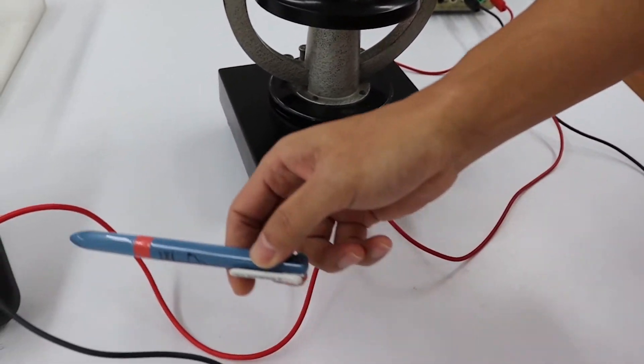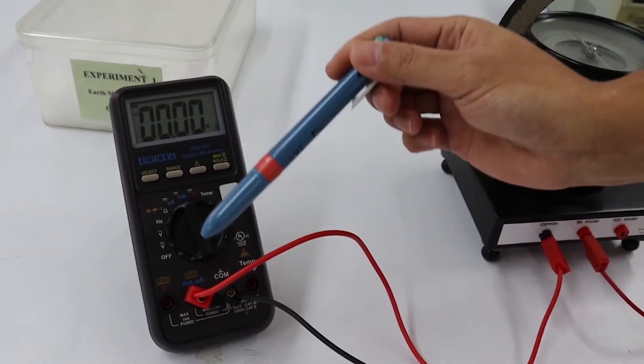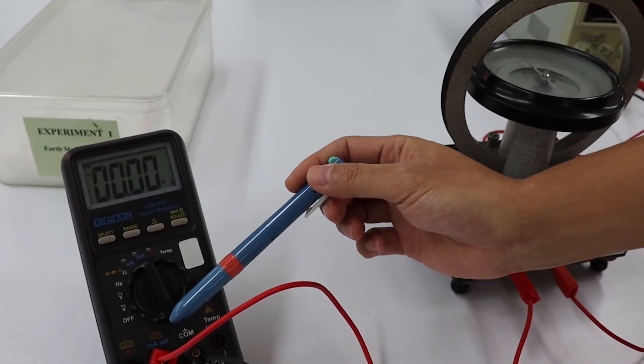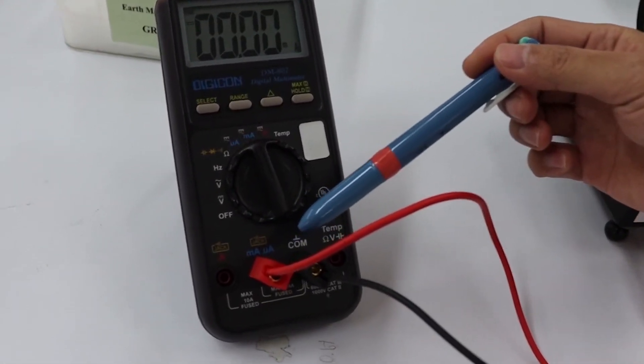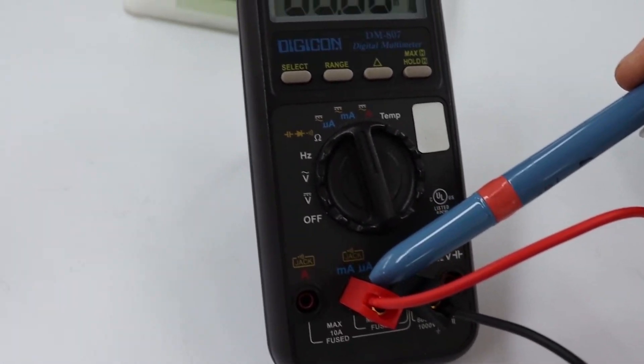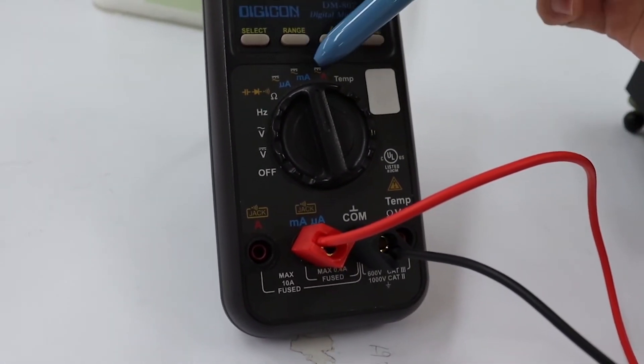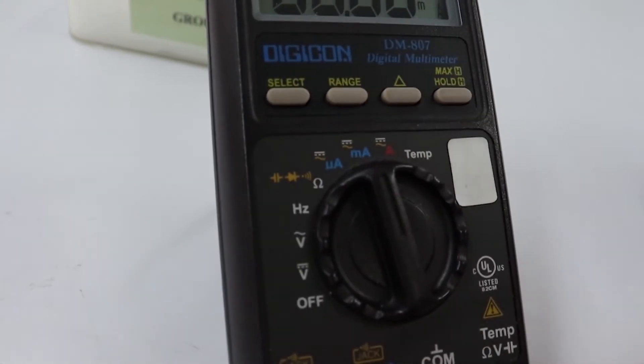The black terminal will connect to the red terminal of digital multimeter for milliampere measurement. Select the multimeter function to be milliampere.